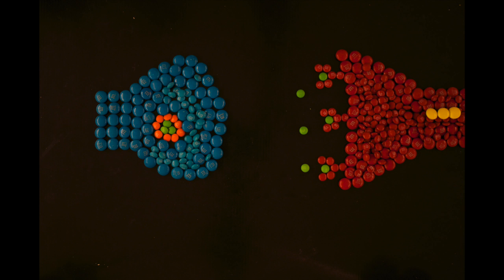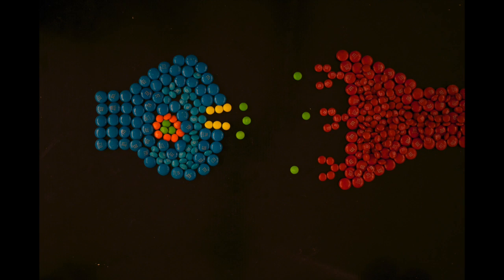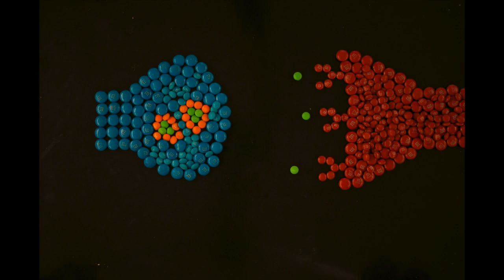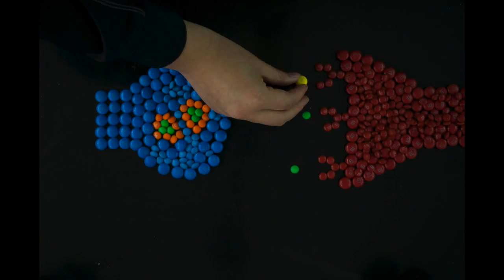From here, the receptors release the chemicals into the cleft. Some return to the presynaptic neuron through transporter proteins, while others are degraded and destroyed by enzymes.